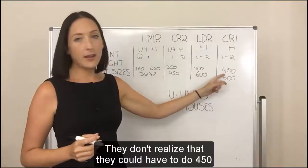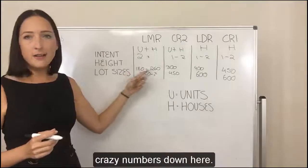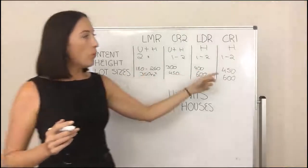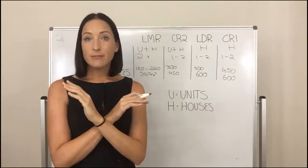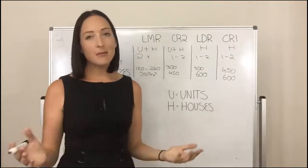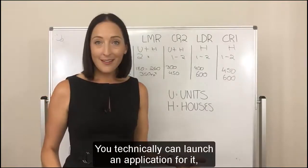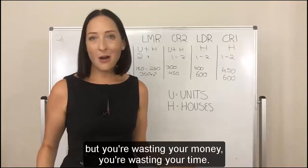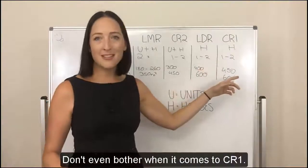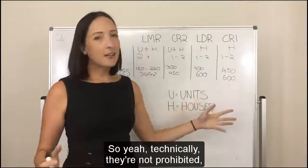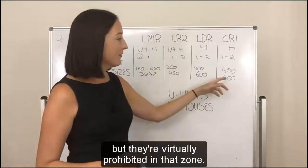That's what's catching a lot of people out — they don't realise they need 450 when they're hearing those smaller numbers elsewhere. When it comes to units in CR1, it's just a no-go. You technically can lodge an application, but you're wasting your money and your time. It's not going to be supported — don't even bother in CR1. Technically they're not prohibited, but they're virtually prohibited in that zone.